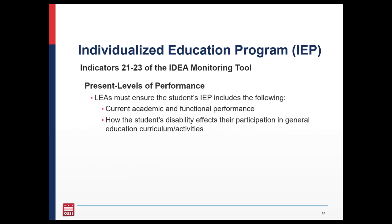Indicators 21 through 23 focus on the student's present levels of performance within the IEP. IDEA monitors will review the student's present levels of performance to ensure it includes information about the student's academic and functional performance and how the student's disability affects their participation in the general education curriculum and activities. More detailed information on indicators 21 through 23 can be found in the IDEA tool on pages 9 through 12.